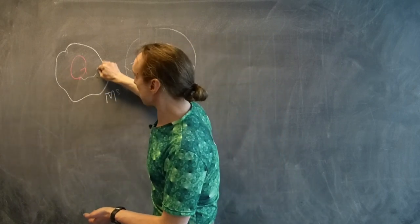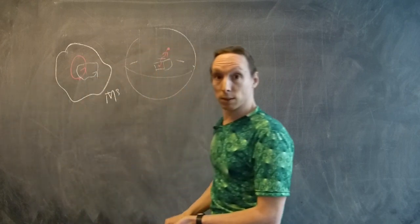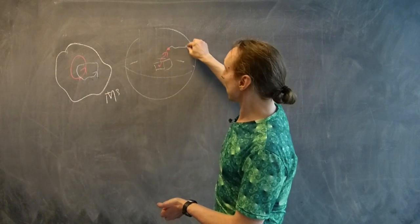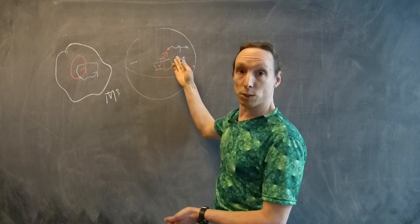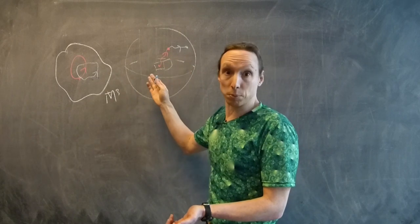And if we have two loops in the 3-manifold, then we can lift one and then the other, and get a longer path in the universal cover. This is like addition of loops.